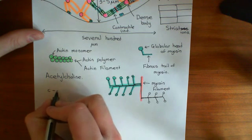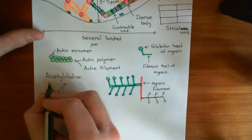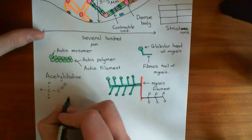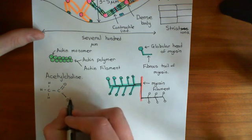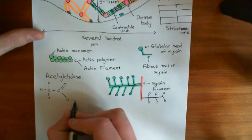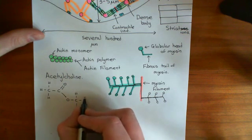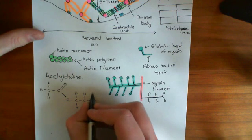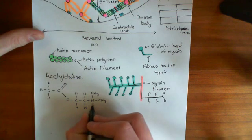So acetylcholine — here is the acetyl group. You have a carbonyl group here and then a methyl group off here. If that then had a hydroxyl group down here, it would be acetic acid. What you've done is you've esterified this with a hydroxyl group on the choline molecule. Here's the oxygen from the hydroxyl group of the choline molecule, and then continuing the choline molecule on, you then have two methylene groups. And then on the end, you have a nitrogen.